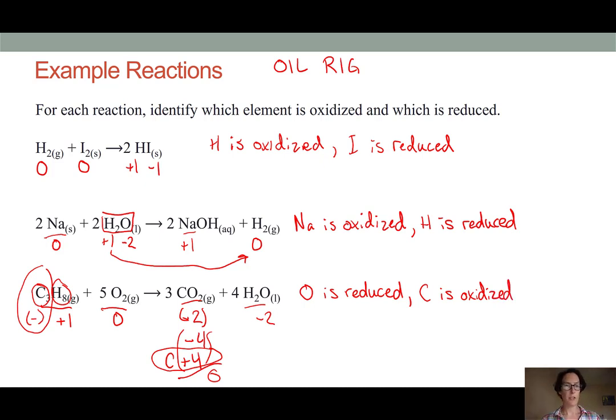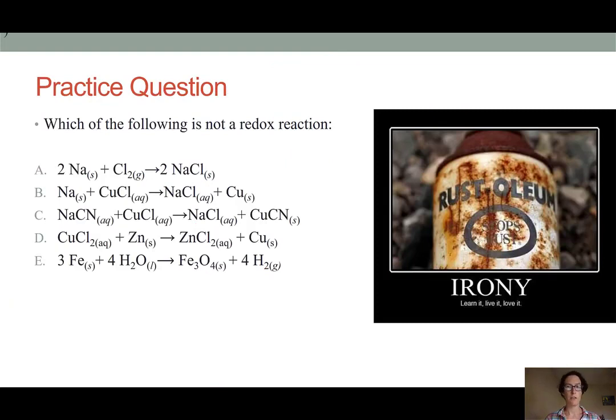So you can watch this video a couple times, go through this example at your own pace until you fully understand how I arrive at all of these conclusions. Once you've done that, we're going to apply our learning to this practice problem. So here I've listed five balanced chemical reactions, and I'd like you to identify which of the five is not a redox reaction.